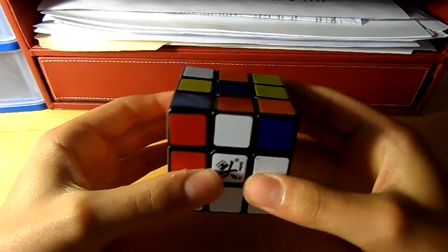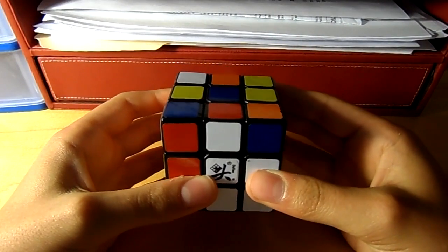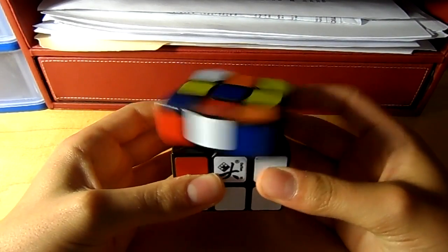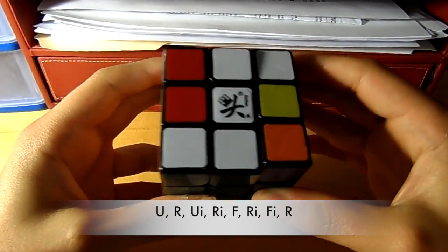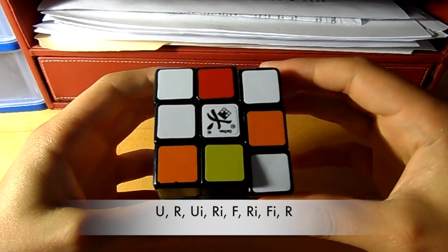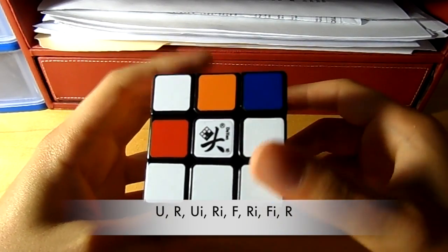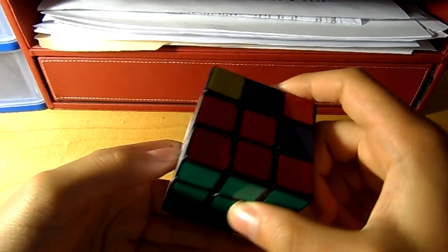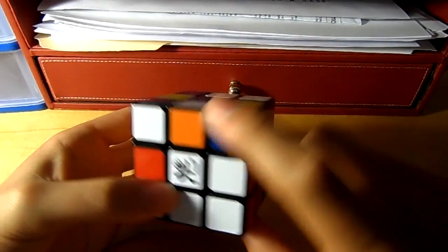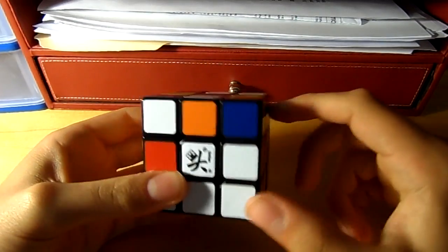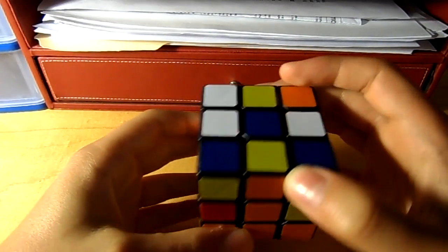So here's the algorithm that you're going to do for sending an edge piece over here to the right: up, right, up inverted, right inverted, front, right inverted, front inverted, right. And you can see that we did not mess anything up down here and we also input the edge from here over to here.